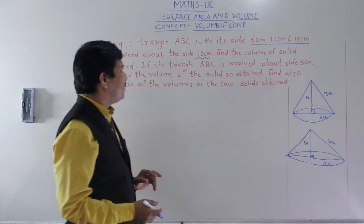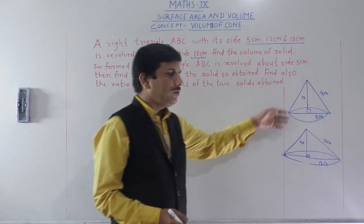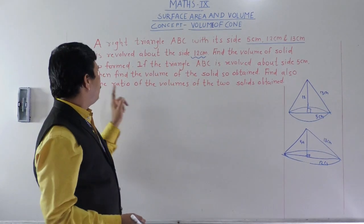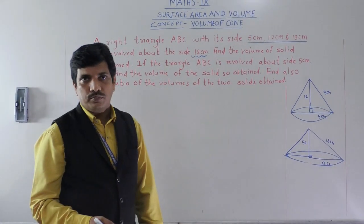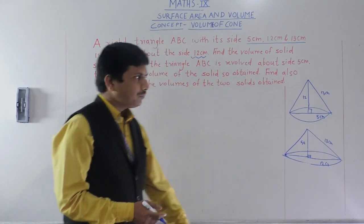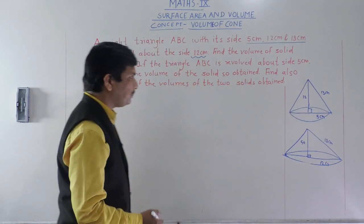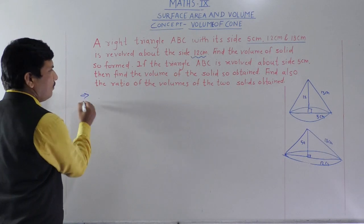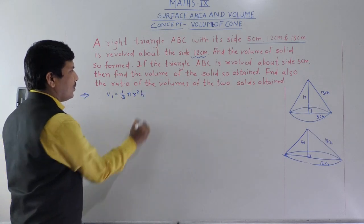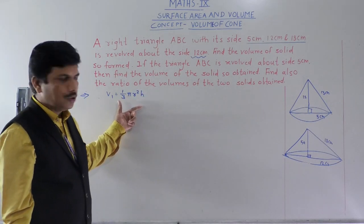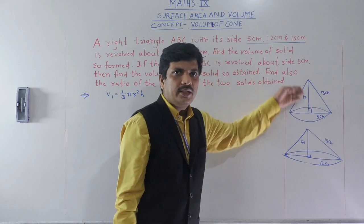Now what they are asking: find the volume of the solids and find the ratio of their volumes. We will label them V1 and V2. V1 is equal to (1/3)πr²h — this is the formula to find the volume of a cone. For the first cone, radius r = 5 cm and height h = 12 cm.